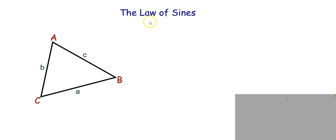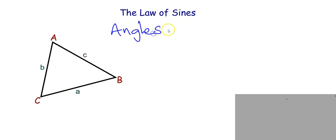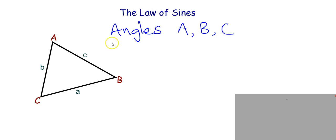In this video we are going to learn about the Law of Sines. Let us look at triangle ABC. In this triangle ABC, the angles are denoted with uppercase letters: capital A, capital B, and capital C. Those are the three angles, and we also have three sides.